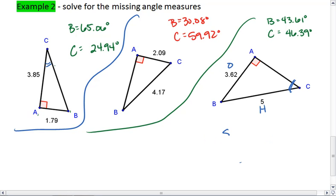Sine of C equals 3.62 over 5. C equals arc sine, or sine inverse of 3.62 over 5, which when we use our calculators gives us 46.39 degrees.